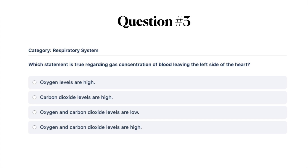Next question: which statement is true regarding gas concentration of blood leaving the left side of the heart? A, oxygen levels are high; B, carbon dioxide levels are high; C, oxygen and carbon dioxide levels are low; or D, oxygen and carbon dioxide levels are high. Go ahead and pause the video while you answer this question and then turn it on when you're ready.